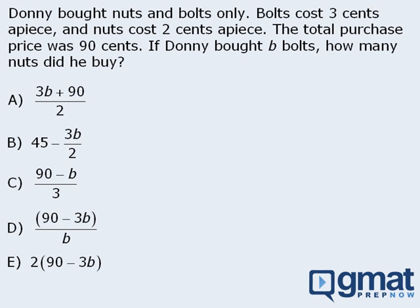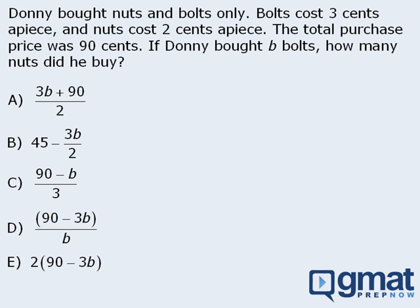Now let's apply these guidelines to this example. You may find it useful to pause the video and attempt the question before continuing. If we're unable to solve this question using the algebraic approach, we must use the input-output approach. Here we have someone buying some nuts and bolts, and we want to find the number of nuts purchased in terms of b, the number of bolts purchased. So let's choose a nice value for the number of bolts purchased — we could say that Donnie purchased zero bolts.